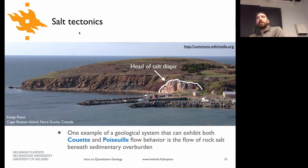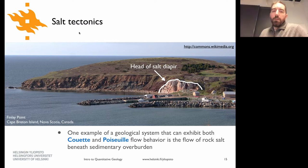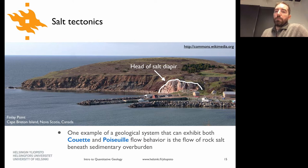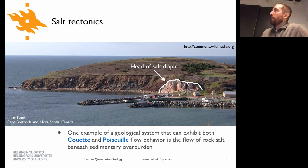Salt also has a relatively low density, so it's not happy being at depth in the Earth. You can get things like in Nova Scotia where there's a nice salt diapir — a head of salt that has flowed from a few kilometers depth up to the Earth's surface. Salt is a really nice impermeable layer, so if you're looking for oil and gas, it's a great place to trap hydrocarbons next to a layer of salt.